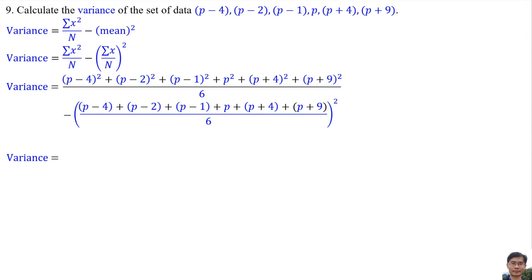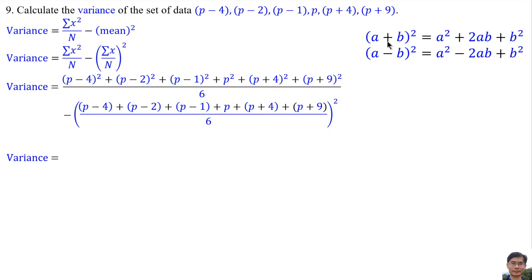We need to find the square of all these numbers. According to the formula: (A plus B) squared equals A squared plus 2AB plus B squared; and (A minus B) squared equals A squared minus 2AB plus B squared.